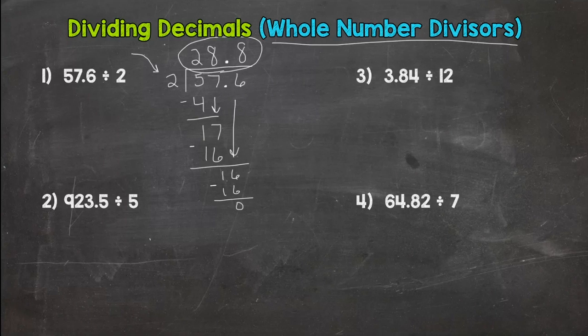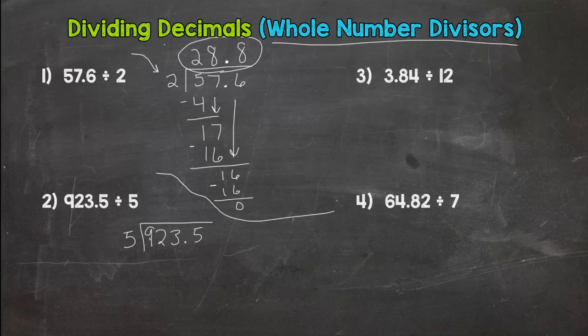So let's go to number two here. And we have 923 and five tenths as our dividend and five as our divisor. I'm going to cut this off here. All right, well, is my divisor whole? Yes, it's a five. So I bring my decimal straight up. And that's where it will go in my answer.